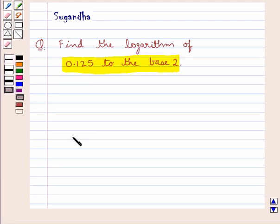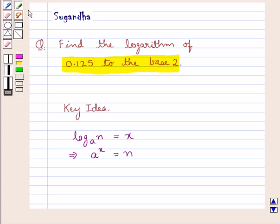Now we know that if we are given log of the number n to the base a is equal to x, this means a to the power of x is equal to n. This is the key idea that we use for this question.